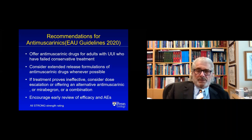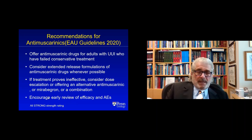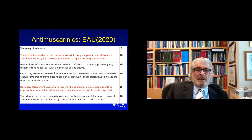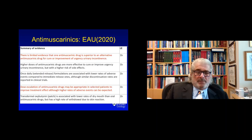The EAU 2020 guidelines: offer the drugs in patients with urgency urinary incontinence, extended-release formulations. If ineffective, consider raising the dose, offering a different anti-muscarinic, a beta-3 agonist, or combination. Review patients when you change medication — I think within a month. EAU calls it like they see it: there is limited evidence that one anti-muscarinic drug is superior to another for cure or improvement of urgency urinary incontinence. You can increase the dose but you can expect higher rates of adverse events.